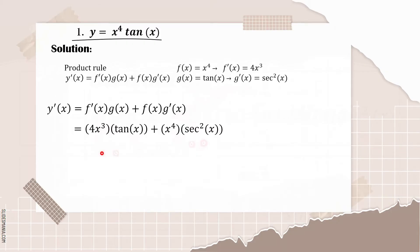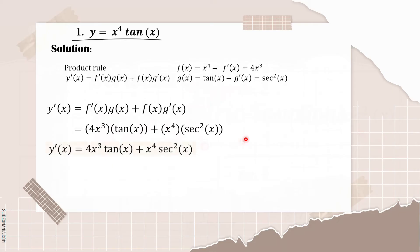We simply multiply four x cubed with tangent of x, and x raised to four with secant squared of x, which results in four x cubed times tangent of x, plus x raised to four times secant squared of x.